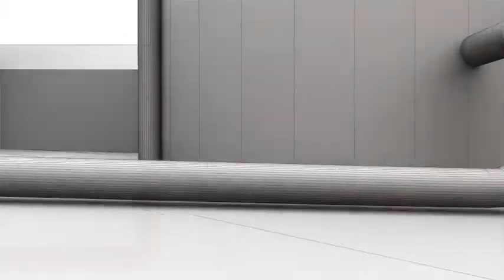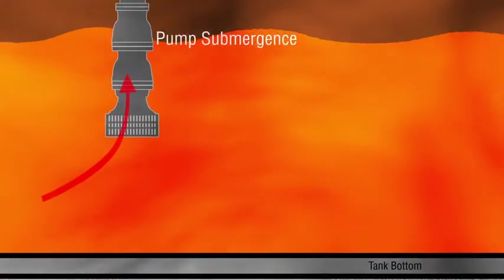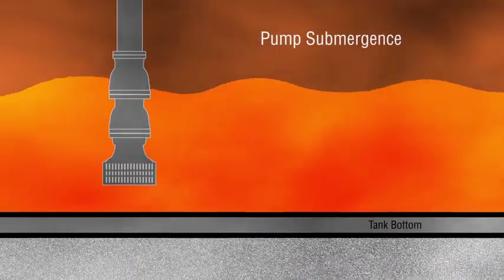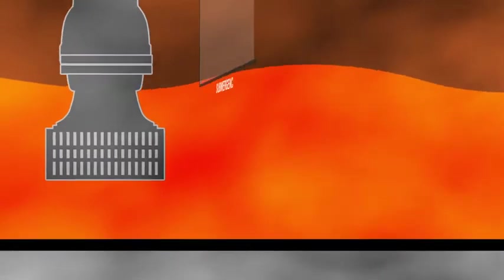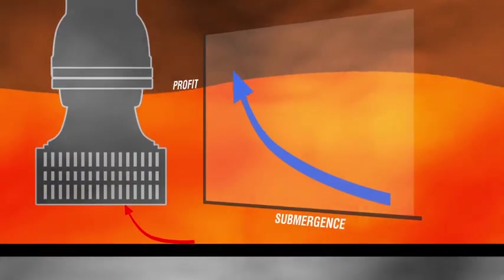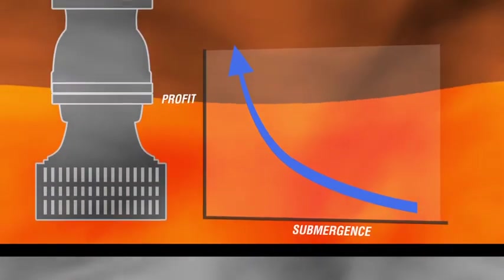Another important consideration for utility use is pump submergence. In CSP operation, the lower the pump's suction can be set in the tank, the lower the tank can be drawn down and the greater the power generation capability and profitability of the plant.